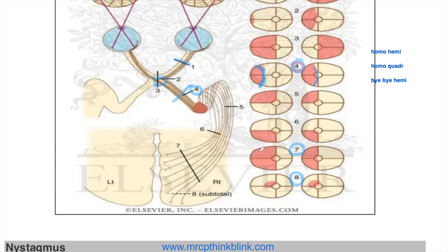When it is number seven — the optic radiation — the homonymous hemianopia becomes congruous, meaning the whole half of the globe is affected. For number eight, the occipital lobe, when that lesion is present, there is macula sparing — the macula is not affected by the lesion. There is still homonymous hemianopia, and it is congruous.